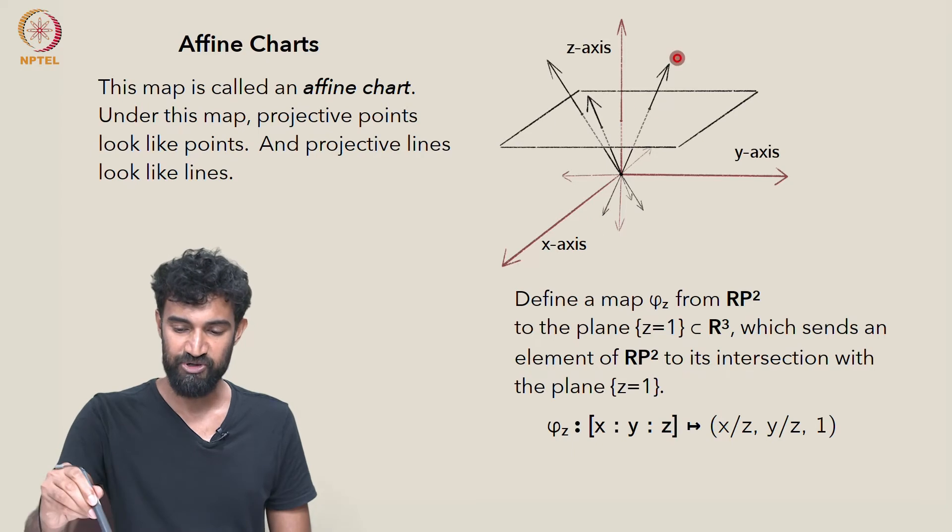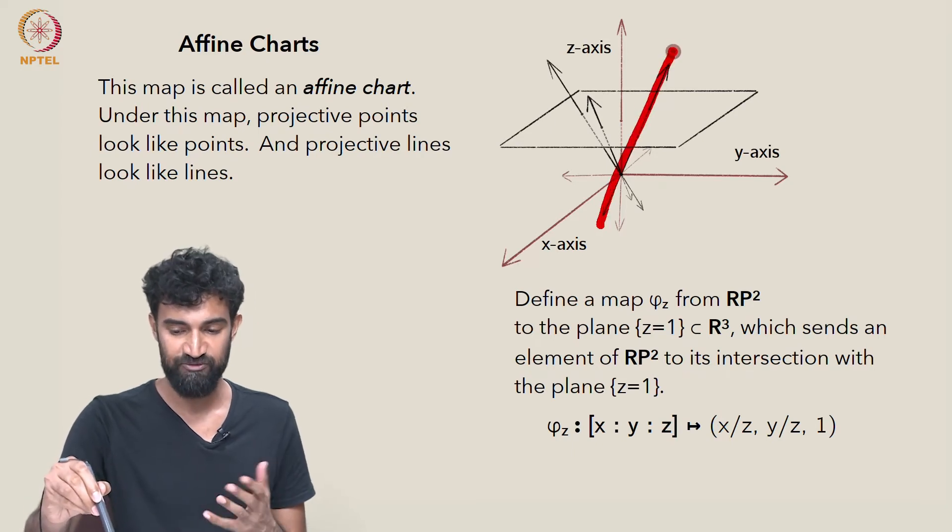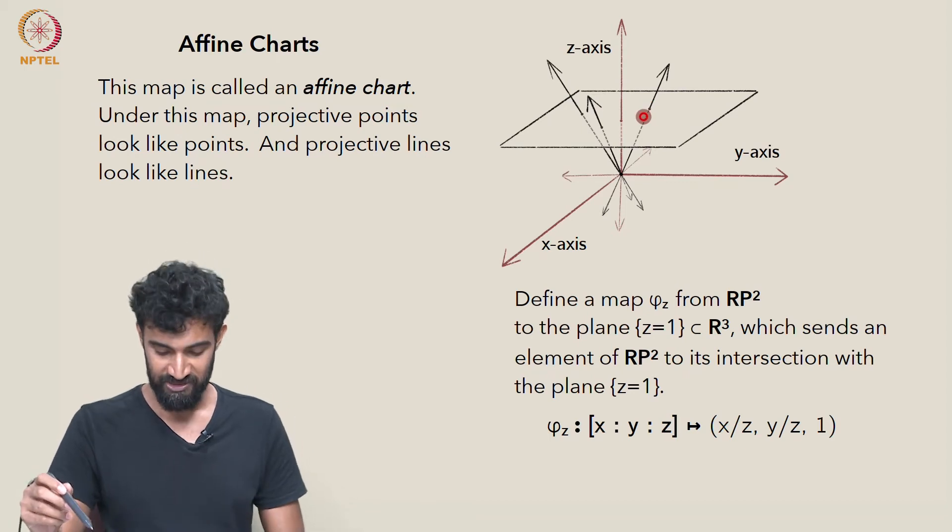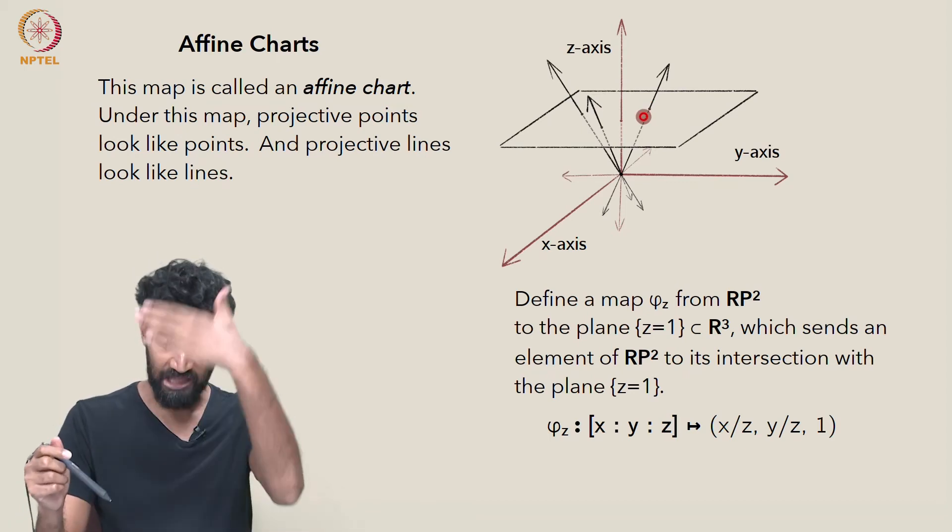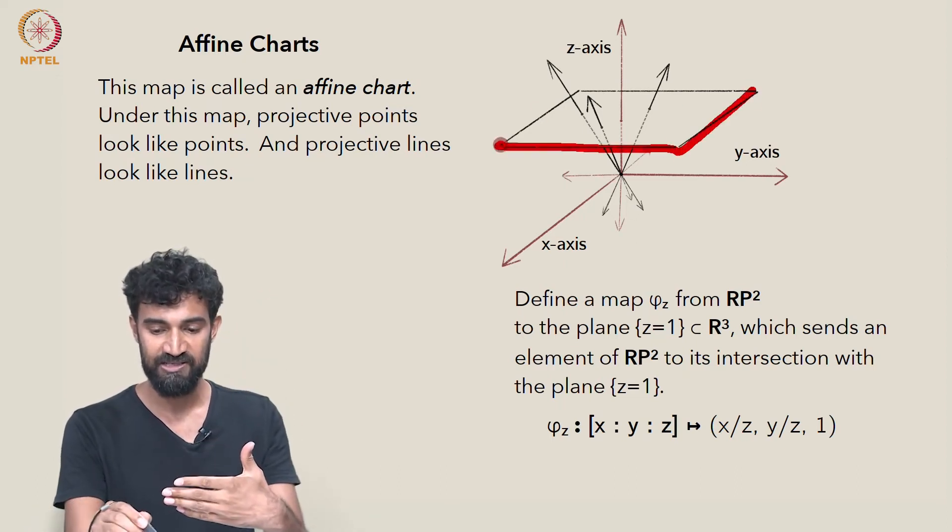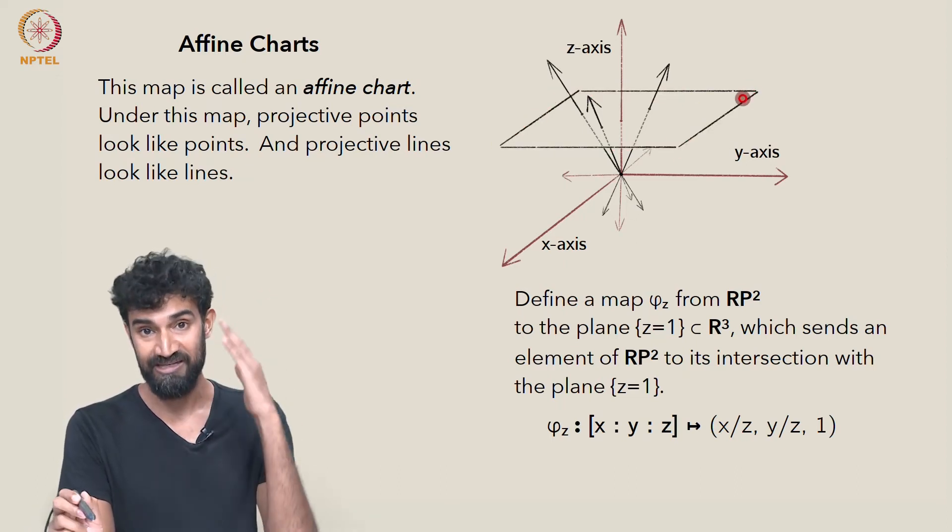So you can see this line through the origin is a projective point, and indeed the image under the map is a point, it looks like a point. And the image of a projective line, a plane through the origin, well that plane through the origin will intersect z equals 1 in a line.